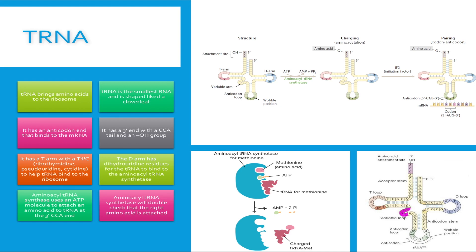Now let's sum up the super important facts for this video. tRNA brings an amino acid to the ribosome. It has many sites including an anticodon end that binds to the mRNA. It has a 3' end with a CCA that binds to the amino acid. It has a t-arm that helps tRNA bind to the ribosome, and a d-arm that helps tRNA bind to the aminoacyl tRNA synthetase so this enzyme can add the correct amino acid to the tRNA.